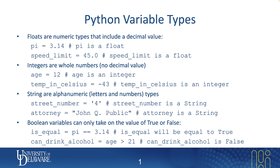The last type we won't use quite as much, but it does commonly come up — and that is a boolean. The interesting thing about booleans is they can only take on two values: True and False. The first letter of True must be capitalized, and the first letter of False must be capitalized if you decide to explicitly assign that value.